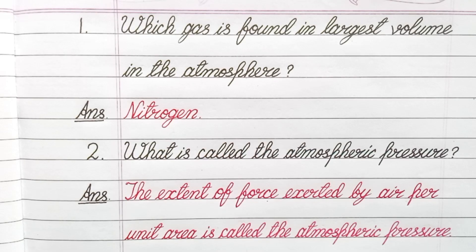Question number 2. What is called the atmospheric pressure? Answer. The extent of force exerted by air per unit area is called the atmospheric pressure.